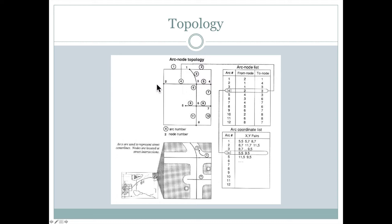Because it has a from node and a to node, we can also assign a direction associated with how travel should be on that street. It might be a two-way street or a one-way street, in which the from node and to node could help us define which direction traffic is going. Associated with that would be other X, Y pairs which we might need to build that line.